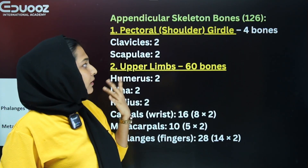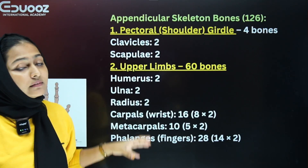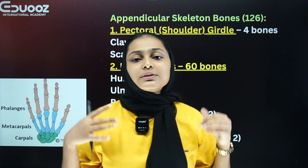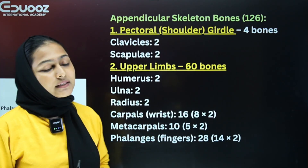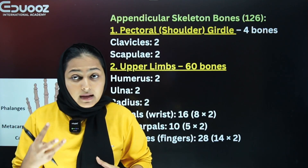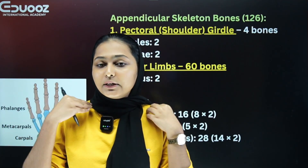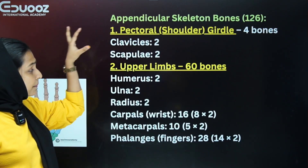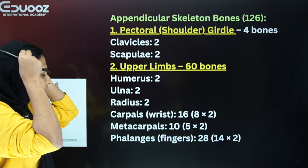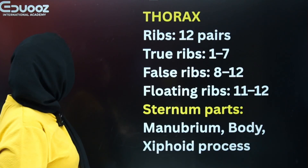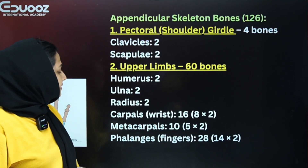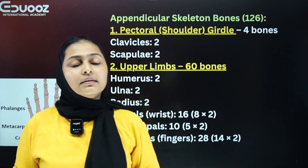The appendicular skeleton has 126 bones including the pectoral girdle, pelvic girdle, and limbs. The pectoral girdle includes the clavicle (collar bone) and scapula. The upper limbs consist of the humerus, ulna, radius, carpals, metacarpals, and phalanges. Carpals are 16 (8 per wrist), metacarpals are 10.